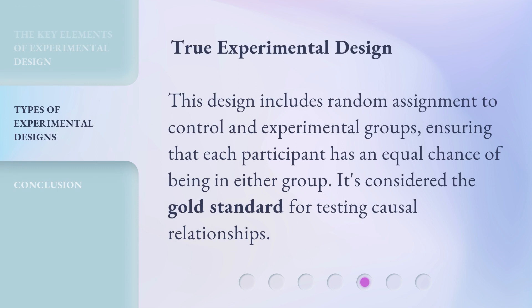True experimental design. This design includes random assignment to control and experimental groups, ensuring that each participant has an equal chance of being in either group. It's considered the gold standard for testing causal relationships.